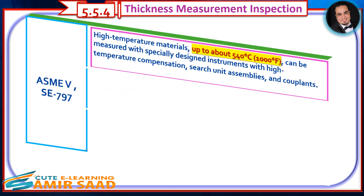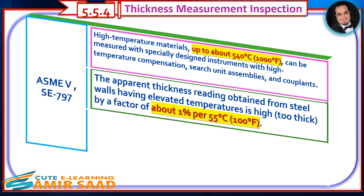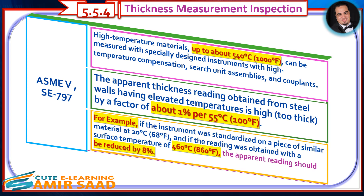As per ASME Section 5, SE-797, high-temperature materials up to about 540°C (1,000°F) can be measured with specially designed instruments with high-temperature compensation, search unit assemblies, and couplants. The apparent thickness reading obtained from steel walls at elevated temperatures is high — too thick — by a factor of about 1% per 55°C (100°F). For example, if the instrument was standardized at 20°C (68°F) and a reading was obtained at a surface temperature of 460°C (860°F), the apparent reading should be reduced by 8%.